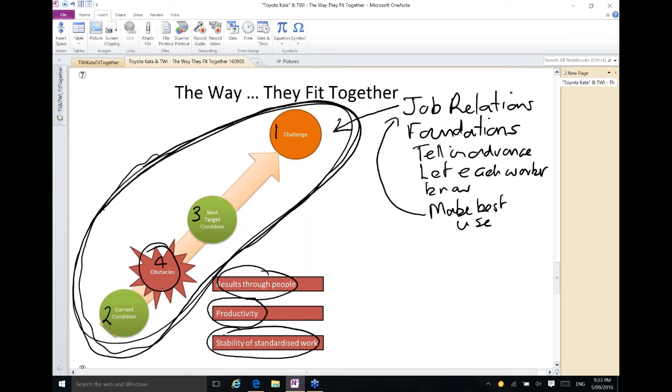We need obstacle removing patterns. JR is our obstacle removing pattern there. JM, list every detail, question every detail, sits there. And JI for stability of standardized work. So I refer to these three as obstacle removing patterns. Patterns that can help you remove obstacles. Removing obstacles get you closer to our next target condition.